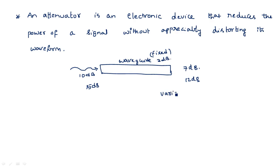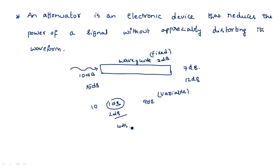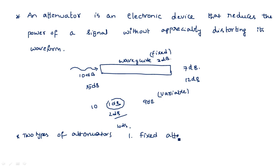Another type is a variable attenuator, where we can adjust the amount of attenuation depending upon the requirement. For example, if I want to reduce only 1 dB from a 10 dB input, the output is 9 dB. We can also select 2 dB or 10 dB reduction using the variable attenuator. So there are two types of attenuators: the first is the fixed attenuator, and the second is the variable attenuator.